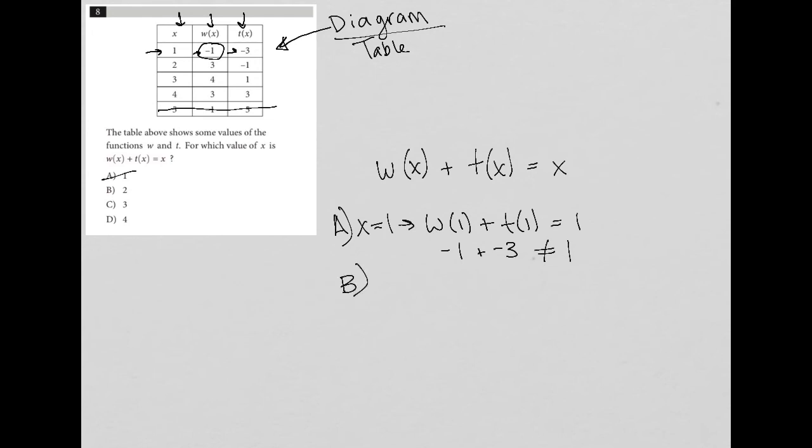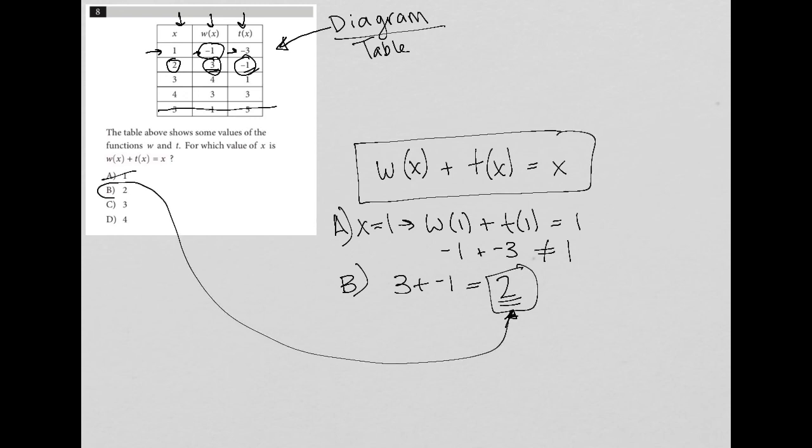Choice B, we'd have w of 2 is 3 plus t of 2 is negative 1, and that is equal to 2. So that is true. My x is 2 in this case, and yes, when I add w of 2 plus t of 2, I also get an answer of 2, which is exactly what I was trying to find. Therefore, the correct answer here is choice B.